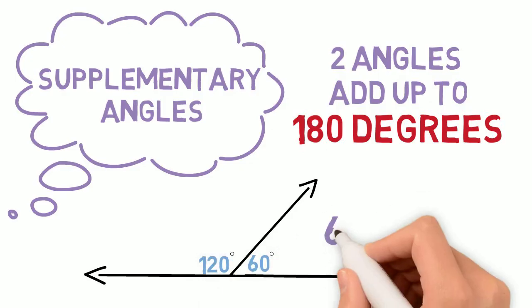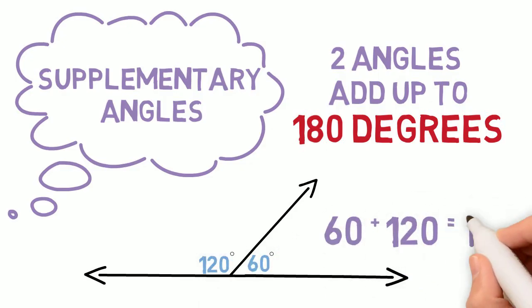When added together, 60 degrees plus 120 degrees equals 180. This means these two angles are supplementary. Notice how the two angles make a straight line together?